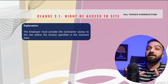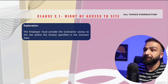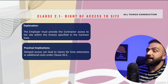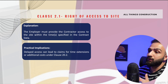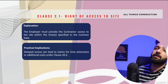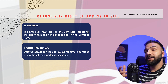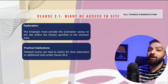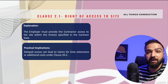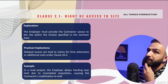This access must be granted within the timeline stipulated in the contract. The implication of this clause is that if the employer fails to provide access on time, this can cause delays in commencement, which will expose the employer to contractor claims under Sub-Clause 20.1, which we will explore later.